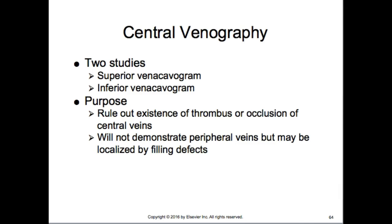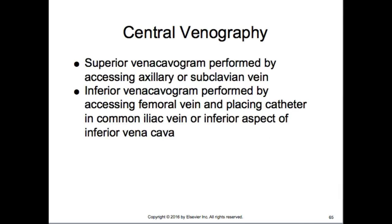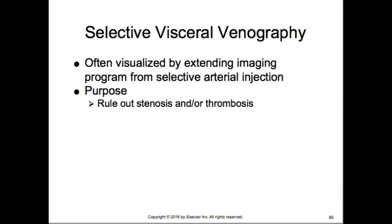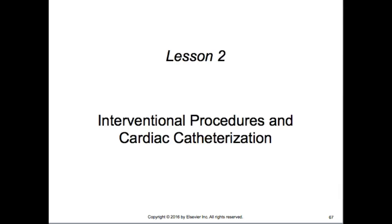Central venography includes the superior vena cavagram and inferior vena cavagram, used to rule out thrombus or occlusion of the central veins. The superior vena cavagram is performed by accessing the axillary or subclavian vein; the inferior vena cavagram by accessing the femoral vein and placing the catheter in the common iliac vein or inferior aspect of the inferior vena cava. Visceral venography is often visualized by extending imaging from selected arterial injections to rule out stenosis and thrombosis.